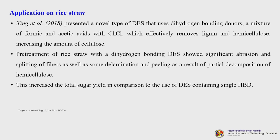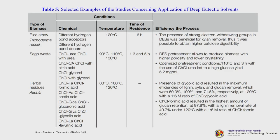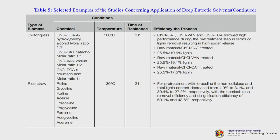Application on rice straw: Zhang et al. presented a novel DES using dihydrogen bonding donors - a mixture of formic acid and acetic acid with CHCl - which effectively removes lignin and hemicellulose, increasing cellulose content. Pretreatment of rice straw with this dihydrogen bonding DES showed significant abrasion and splitting of fibres and delamination due to partial decomposition of hemicellulose, increasing total sugar yield compared to single HBD DES. This is a published work in Chemical Engineering Journal. A table of selected studies on DES for rice straw, sago waste, and herbal residues with process conditions is provided for reference.